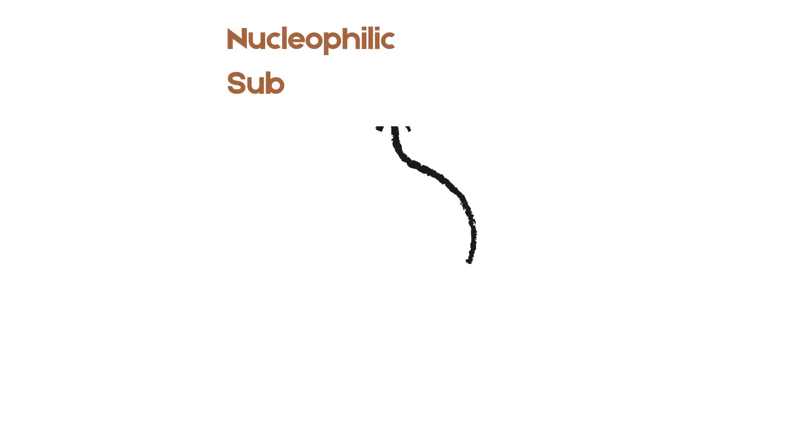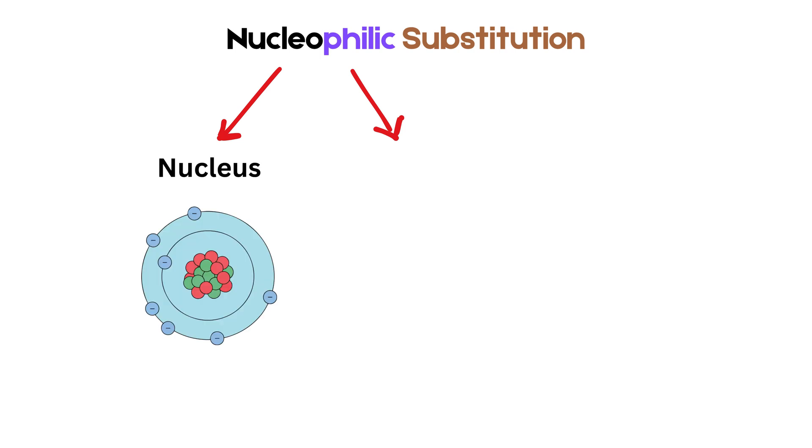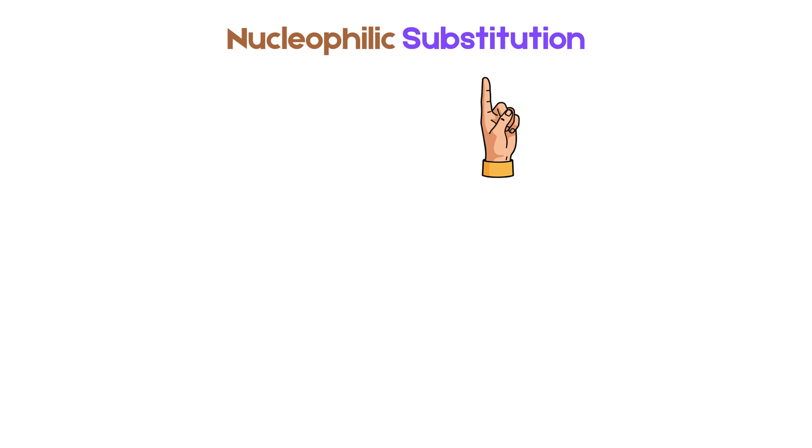Let us begin by understanding what a nucleophilic substitution reaction actually means. The word nucleophilic comes from two parts: nucleo, meaning nucleus or positive center, and philic, meaning loving. So a nucleophile is something that loves the nucleus or, more simply, something that is negatively charged and wants to attack a positive center. Now, substitution means replacement where one group leaves and another takes its place.